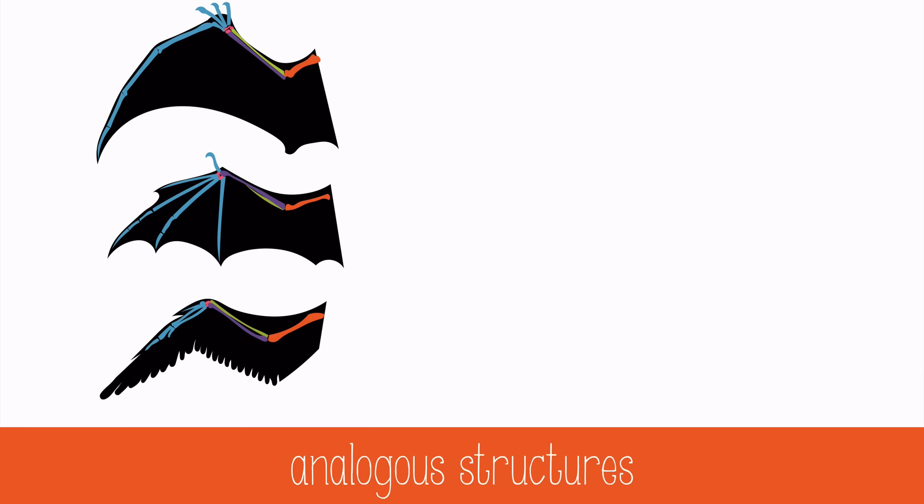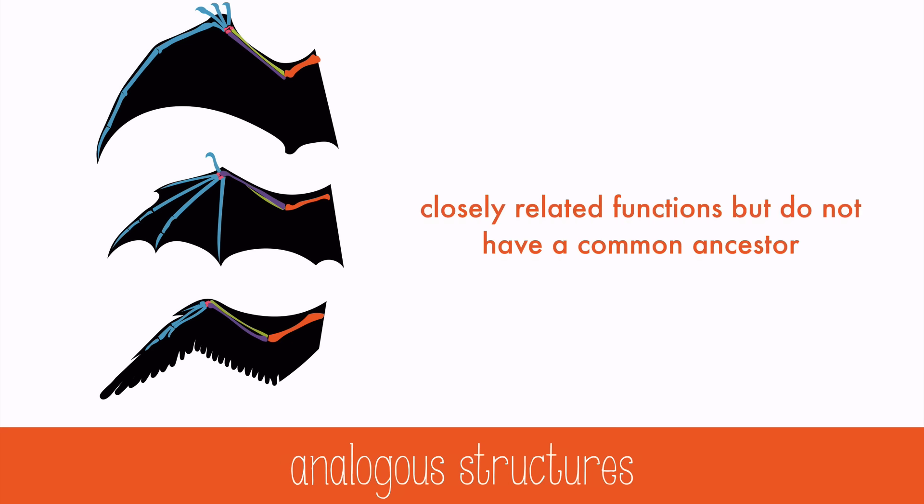But if you look at how they use their forearms for flight, they're very different. The pterodactyl has one long finger that spans a large section of the wing, the bat has a wing between its fingers, and the bird has feathers all along the forearm. These are analogous structures because even though they have closely related functions, they do not have a common ancestor for that function. Each of these species evolved their ability to fly from a different ancestral line.